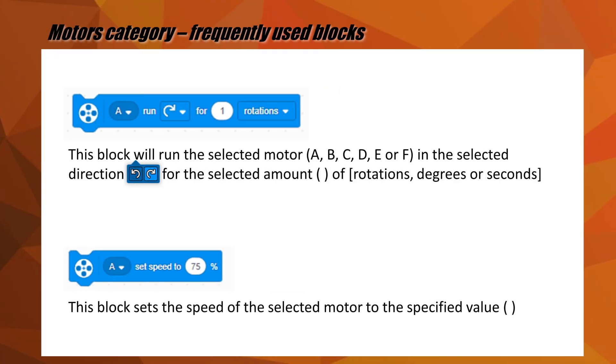For our programming, we typically use the block that runs the selected motors in a given direction for a given amount of rotation, degrees, or seconds. The other motor category block we use most often sets the motor speed for a given motor.